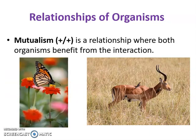Mutualism is a plus/plus relationship — that's where both organisms benefit. Here we see the monarch butterfly and a flower. The picture on the right shows a gazelle and what's called an oxpecker that will actually eat the insects off the back of savannah-dwelling creatures. That's a relationship where the oxpecker bird benefits from eating the flies, and the gazelle benefits because it gets cleaned up and doesn't have ticks or other flies buzzing around it. So it's a mutualistic relationship.